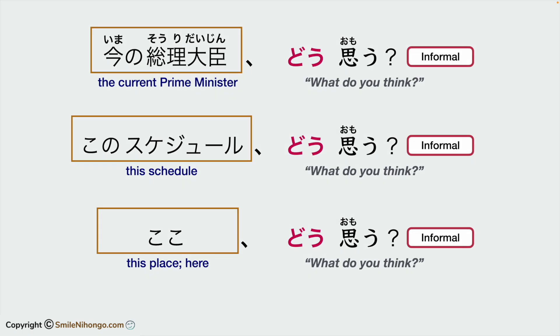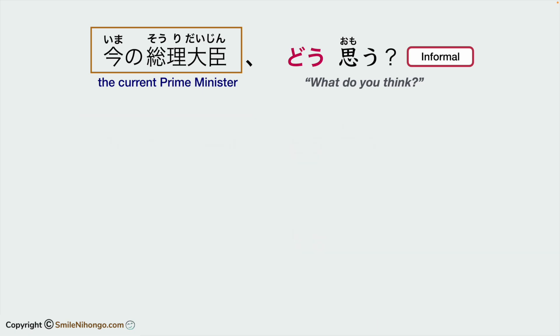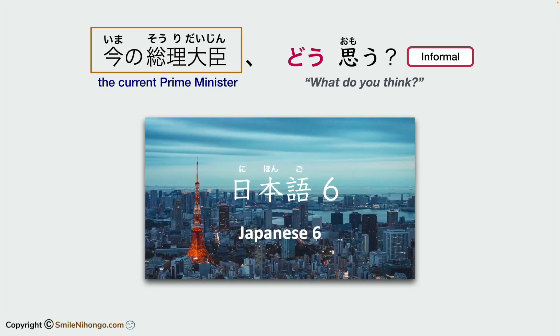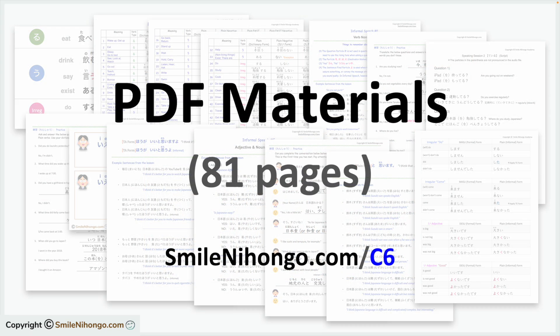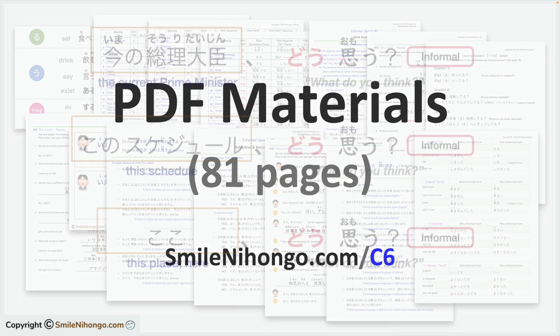This lesson is a sample lesson of a Japanese online course, ニホンゴロク. The course teaches you all about Japanese plain form and informal speech. It also provides 81 pages of PDF materials and worksheets. You can go to smileonihongo.com/c6 to learn more about the course.